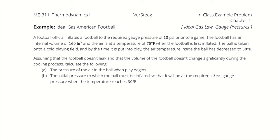Assuming that the football doesn't leak, and that the volume of the football doesn't change significantly during the cooling process, calculate the following. Part A: the pressure of the air in the ball when play begins. Part B: the initial pressure to which the ball must be inflated so that it will be at the proper and required 13 PSI gauge pressure when the temperature reaches 30 degrees Fahrenheit.